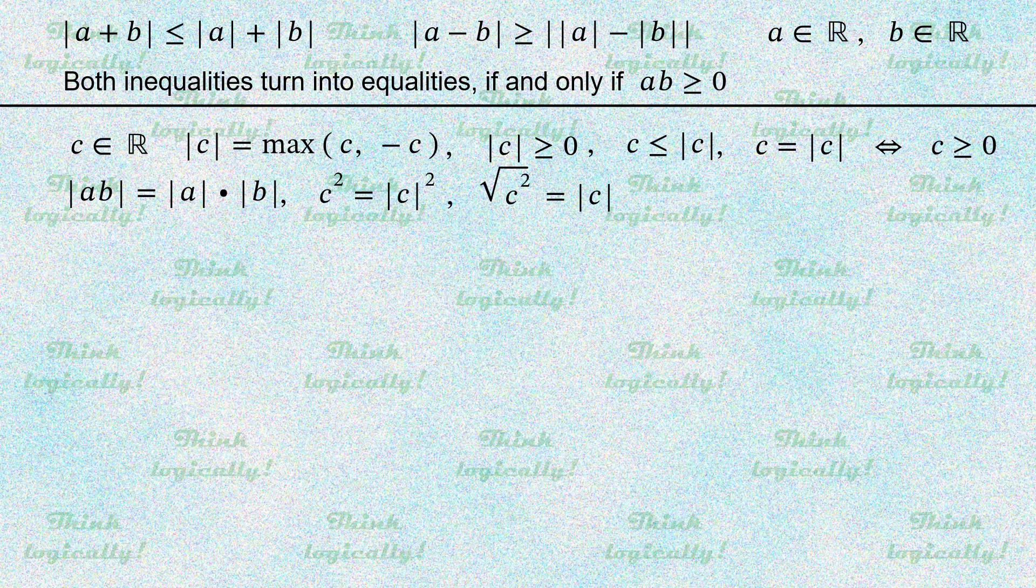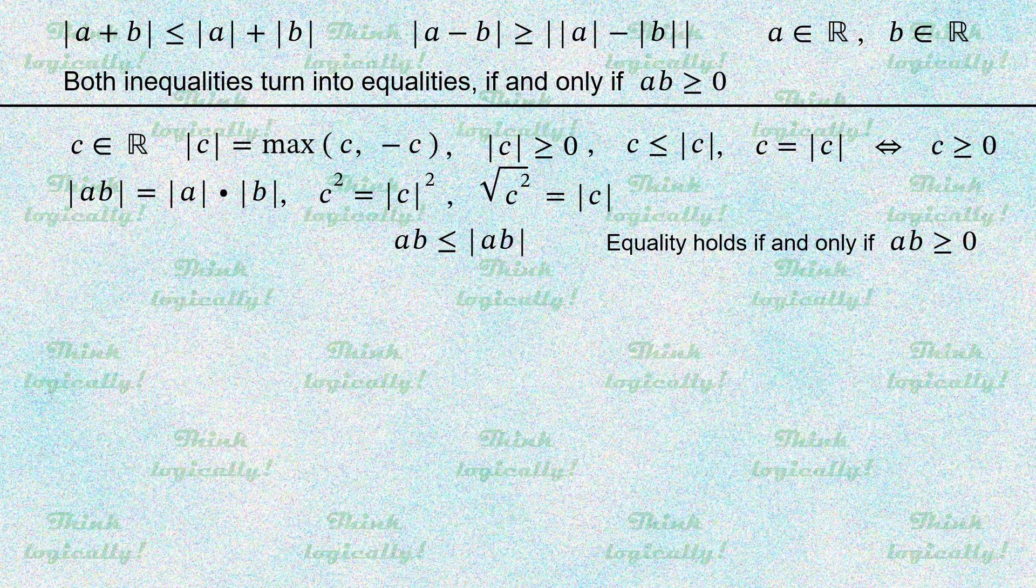That's all we need to prove the inequalities, so let's move on to proving them. As a start, we write that the product a times b is no more than the absolute value of a times b, while the equality holds if and only if a times b is non-negative.